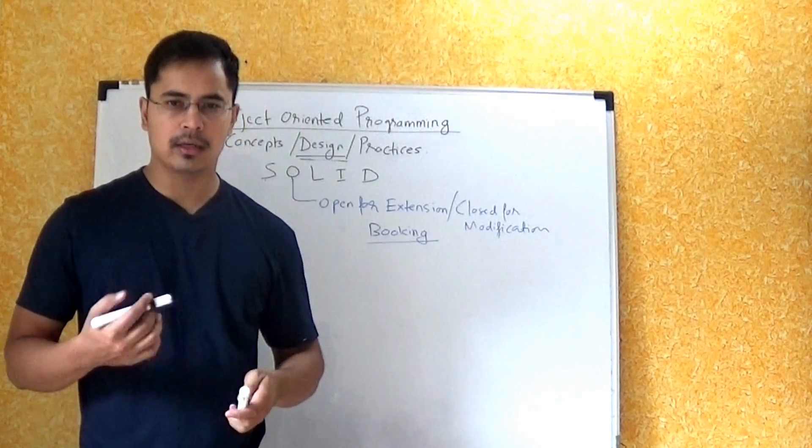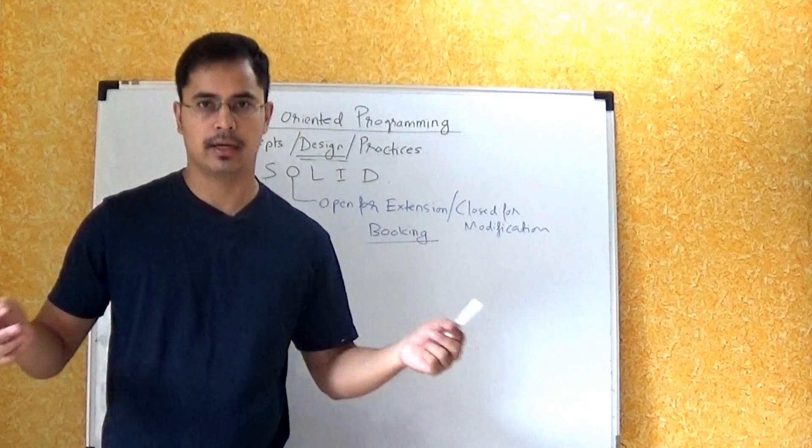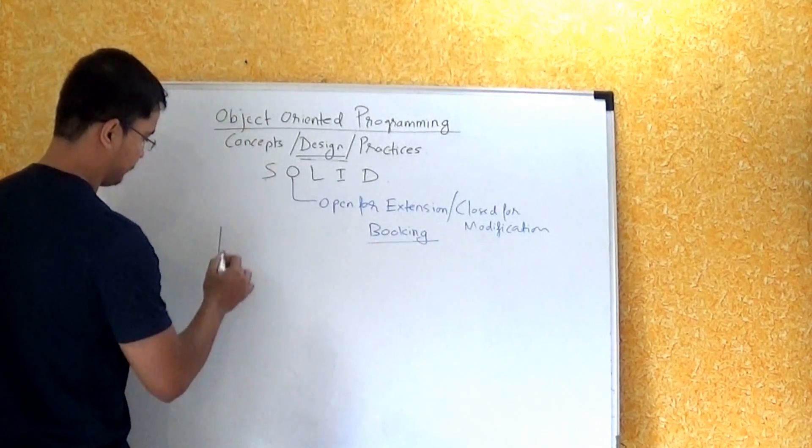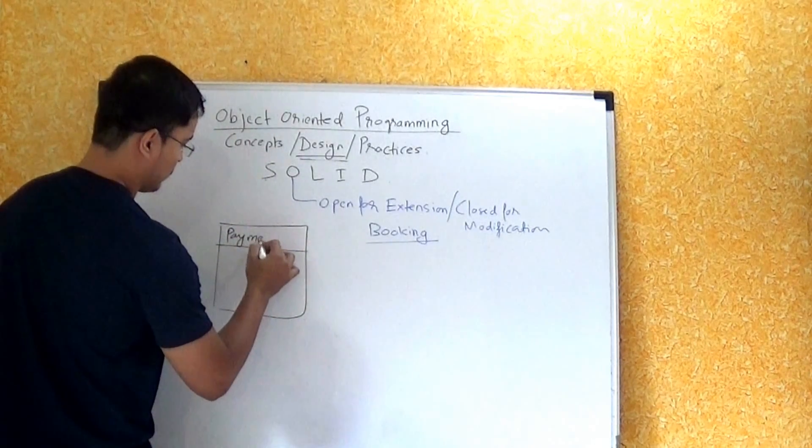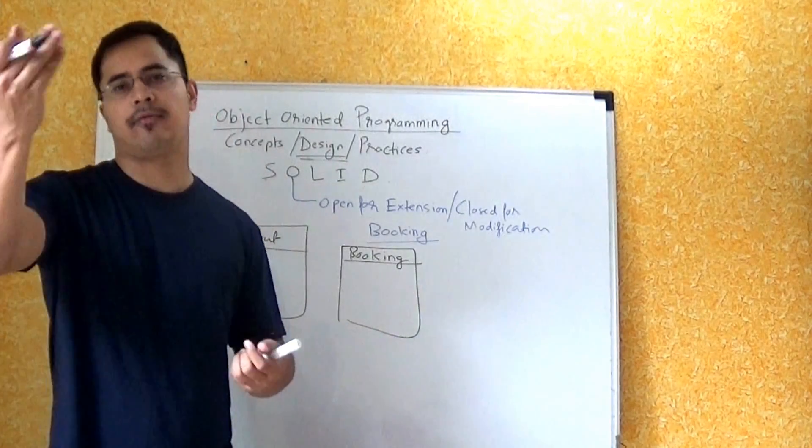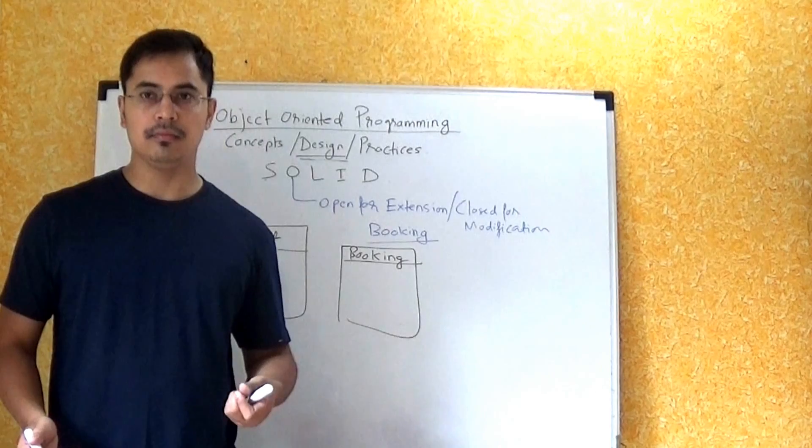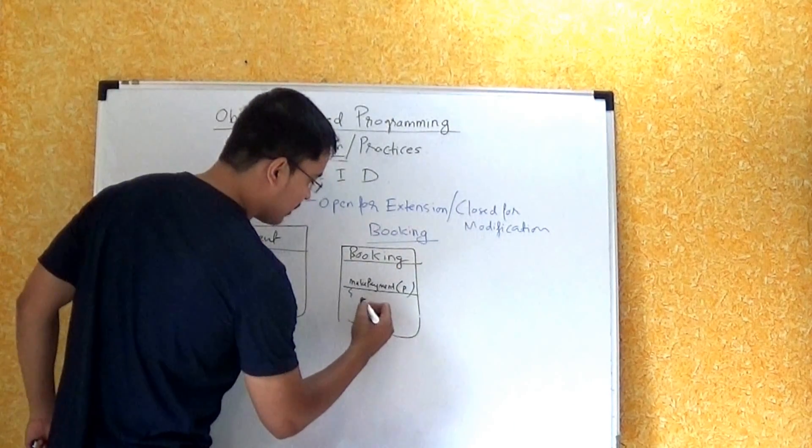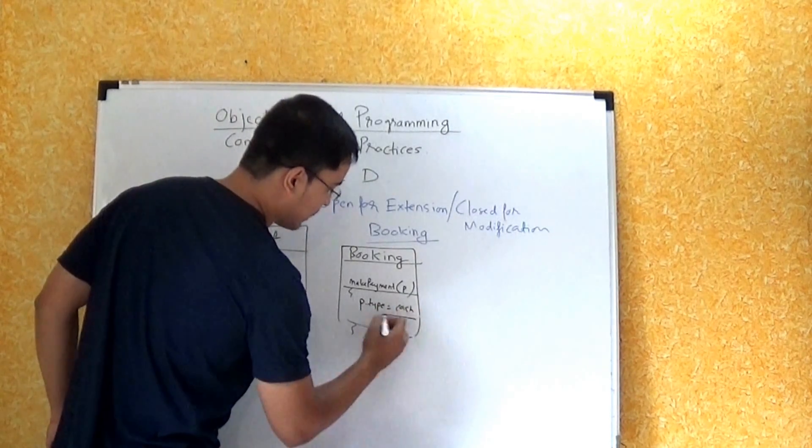That was a real life example. Let's go to the technical example. When we talk about online court booking, obviously there will be payment involved of some kind. So there are two ways we can code this. We can write a class Payment. What kind of payment can we have? Online payment, card payment, or cash payment. Exactly, we have different options.